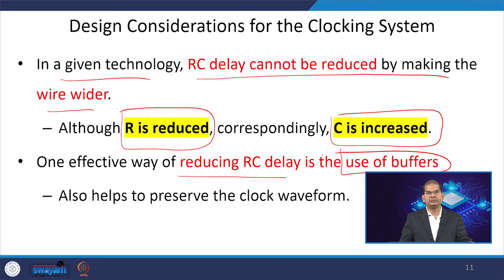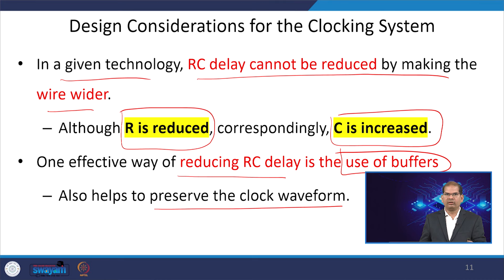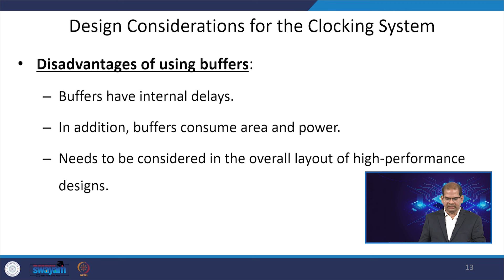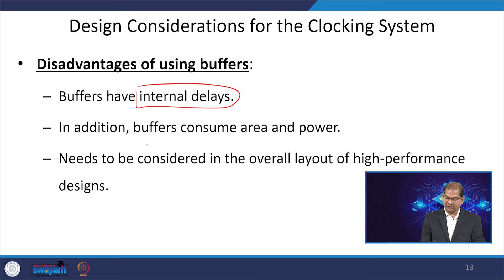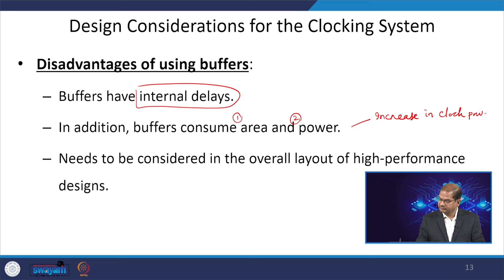One effective way to reduce the delay is the use of buffers. We have to use specialized buffers in the clock tree. Buffers help preserve the clock waveform, because if you pass the signal a longer distance without buffering, the transition time or slew of the clock signal will be degraded. The disadvantage of using buffers is that a buffer has some intrinsic delay; it also consumes area and power, leading to an increase in clock power.